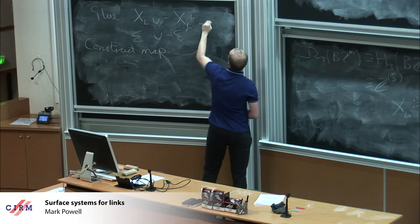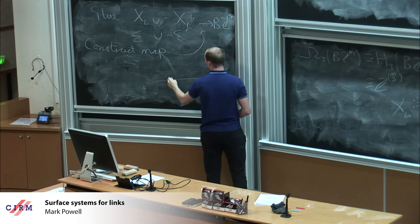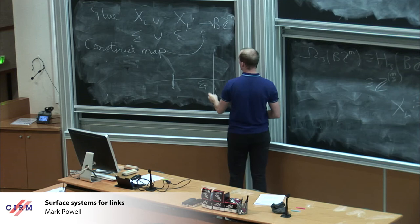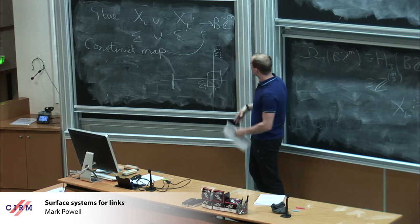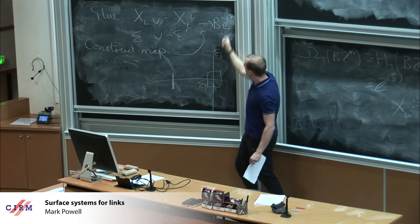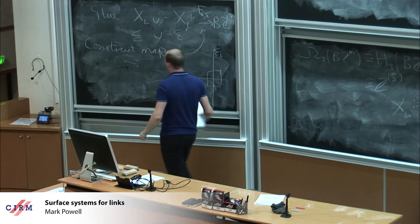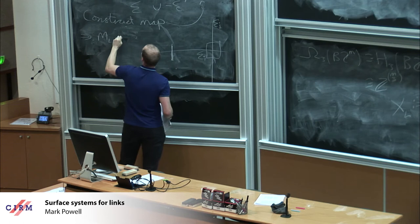I take each surface, thicken it — the thickening coordinate gets mapped around one of the S^1 factors of the m-torus. When two surfaces intersect, there's a square where the thickenings intersect, mapping over a two-cell. When there's a triple intersection, that region maps over a three-cell of the 3-torus. So a surface system gives rise to a choice of homotopy class of maps, and using sigma and sigma-prime, M_{L,L'} is null-bordant with that map F.